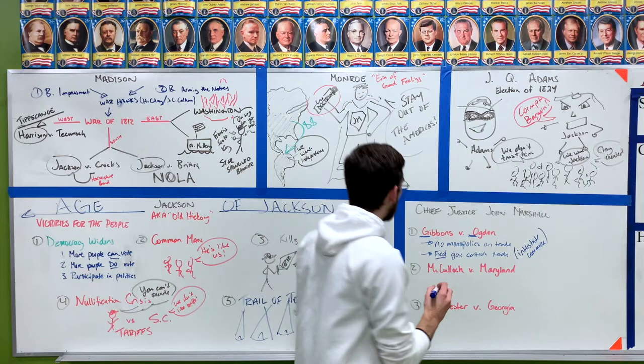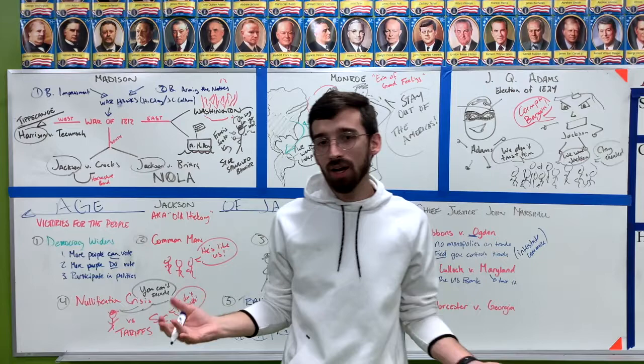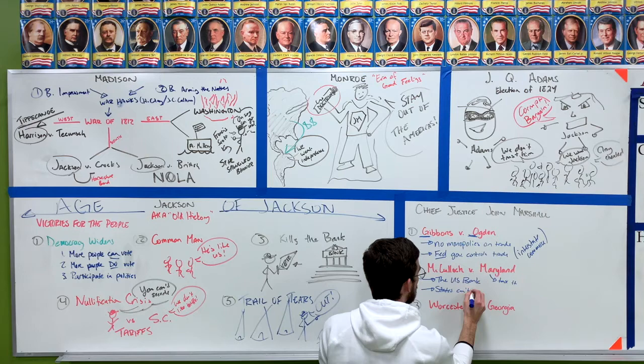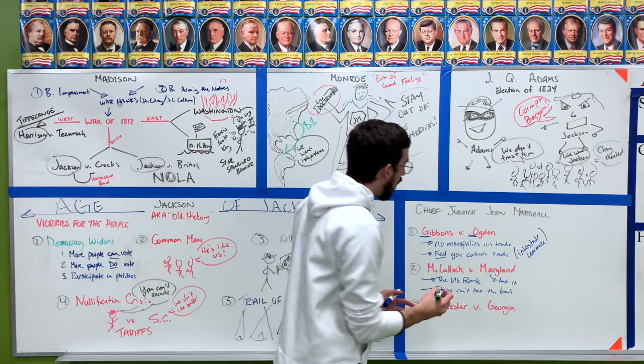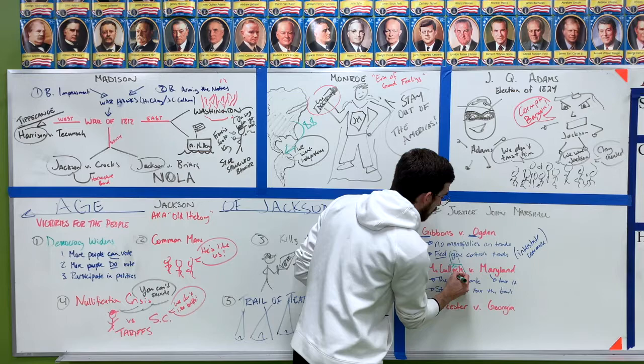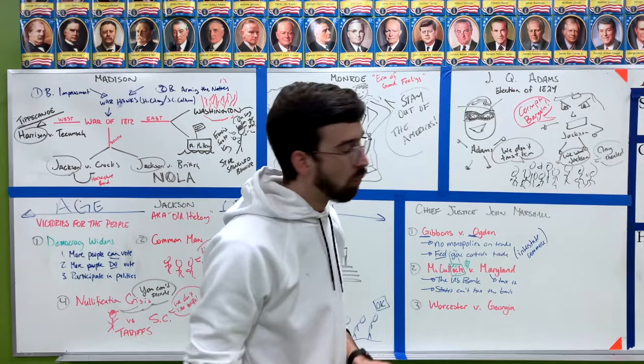Next court case: McCulloch versus Maryland. This is all about the U.S. Bank — Maryland is trying to tax it, and that is not going to be okay. This court case says states can't tax the bank because the bank is part of the United States government. To remember it: McCulloch has the word 'lock' in it, and you lock up your money — so this is the court case about the bank.